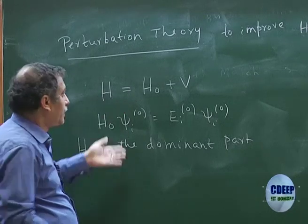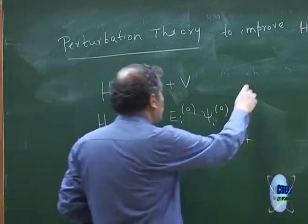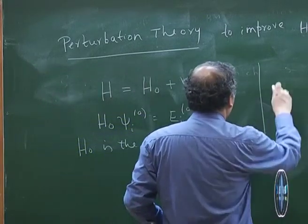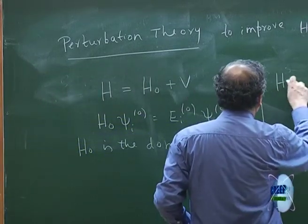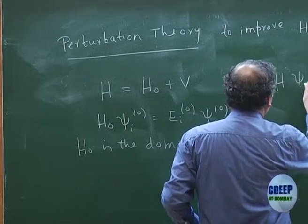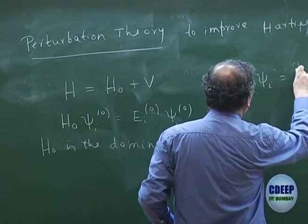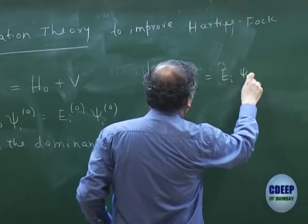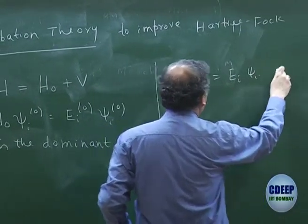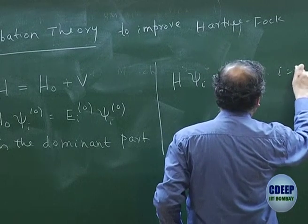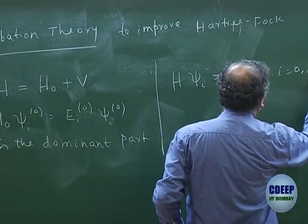Then the rest is the perturbation V. So V is the perturbation and H₀ is the dominant part of H, which means the solutions of H₀ — at least for the ground state — are a dominant contribution to the ground state solution of H. Let us assume that H has solutions ψᵢ ordered as i = 0, 1, 2, etc.